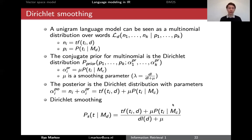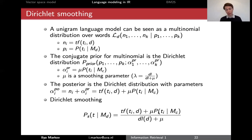Just as with Jelinek-Mercer, we have the actual term frequency of a word in a document, the collection frequency of a word in the whole collection, and the document length — and all these probabilities sum to one.